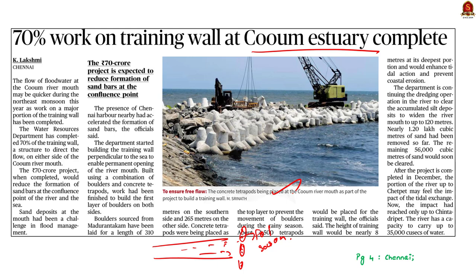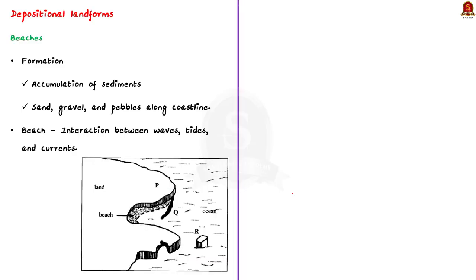In this context, let us understand about depositional landforms created by sea waves. When water has a lot of energy, it carries lots of sediments. When water loses its energy, any sediment it is carrying will be deposited, and the buildup of deposited sediment can form different features along the coast. There are different types of depositional landforms created by waves. The first is beaches — the most common depositional landforms created by the accumulation of sediments like sand, gravel, and sometimes pebbles along the coastline. They are dynamic environments that change frequently, depending on the interaction between waves, tides, and currents.